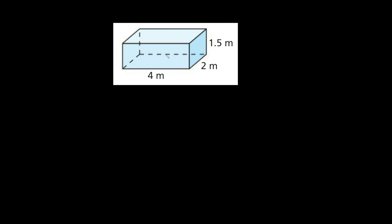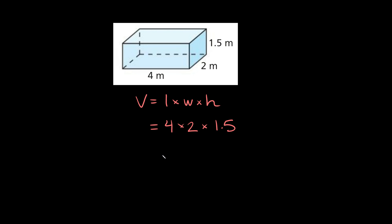As you can see here we have a rectangular prism. So for a rectangular prism, or basically something that looks like a box, the volume is equal to the length times the width times the height. So here we can say that the volume is going to be equal to 4 meters times the width of 2 meters times the height of 1.5 meters.